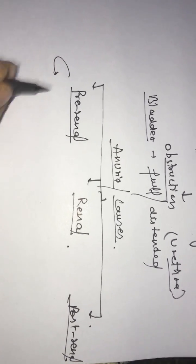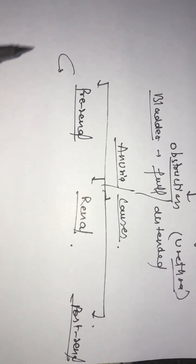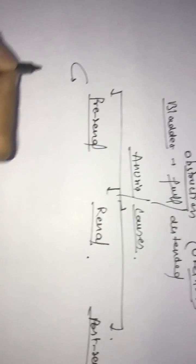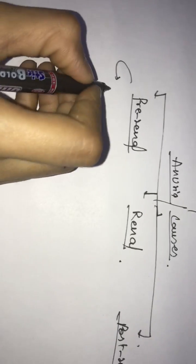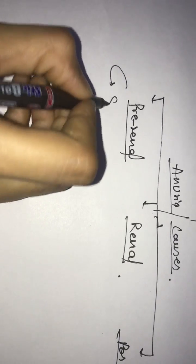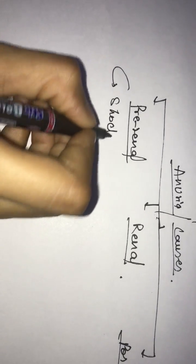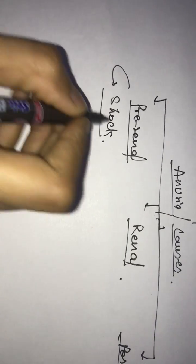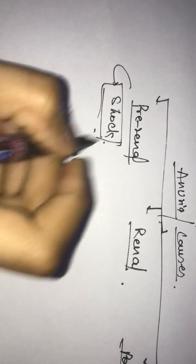If we look at pre-renal, we don't have urine formation. What is that? Most commonly, shock.